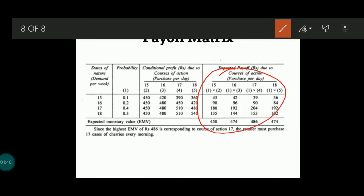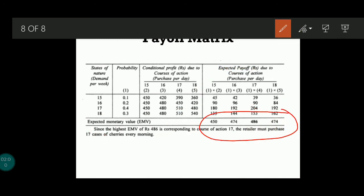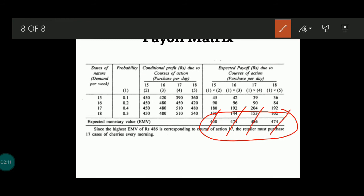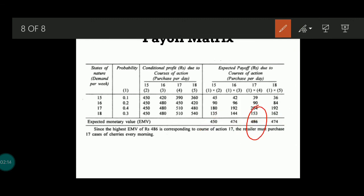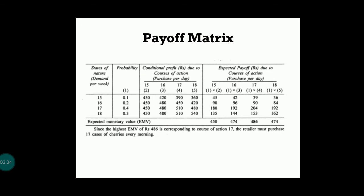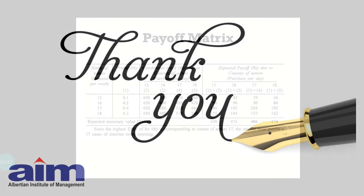From the resultant EMV matrix, the four values are 450, 474, 486, and 474 for purchasing 15, 16, 17, and 18 cases respectively. The maximum EMV is 486, which corresponds to the course of action of purchasing 17 cases. Therefore, the retailer should purchase 17 cases of cherries every morning to maximize profit. Thank you very much — this is Jitin Benedict.